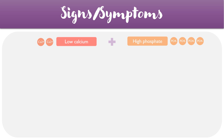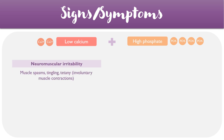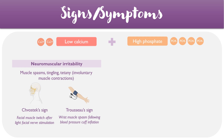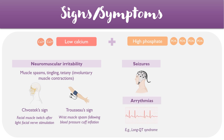Turning towards the signs and symptoms of hypoparathyroidism, these are largely dependent on the low calcium and high phosphate levels within the blood. One of the hallmark features of hypocalcemia is neuromuscular irritability, where patients experience muscle spasms, tingling, and involuntary muscle contractions. There are two key signs to be aware of: Chvostek's sign, which is twitching of the facial muscles after the facial nerve is stimulated, and Trousseau's sign, which is muscle spasms following blood pressure cuff inflation. Other possible symptoms of hypocalcemia include seizures and arrhythmias, particularly long QT syndrome.